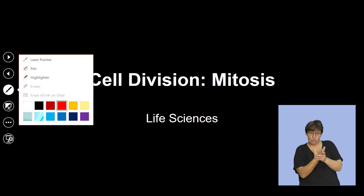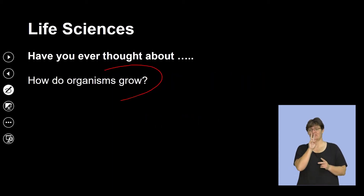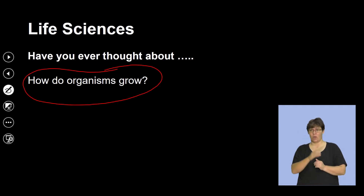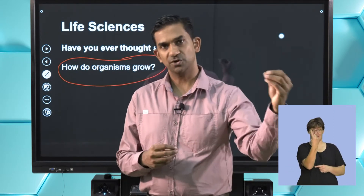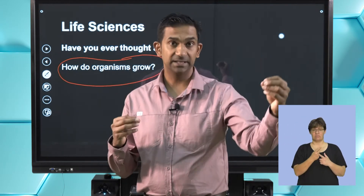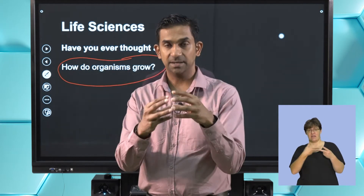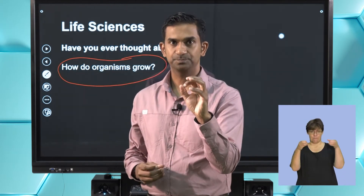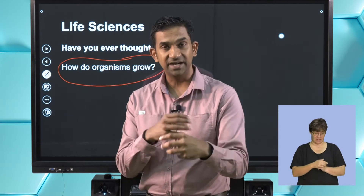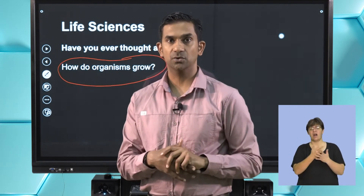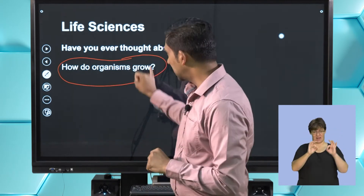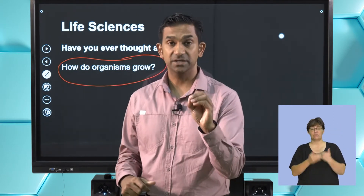If we try and understand how organisms grow and increase in size — we all started from a single cell stage where there was a process of fusion between the male gamete and the female gamete to form a single cell. That cell then divides, produces more cells, and becomes a multicellular organism.